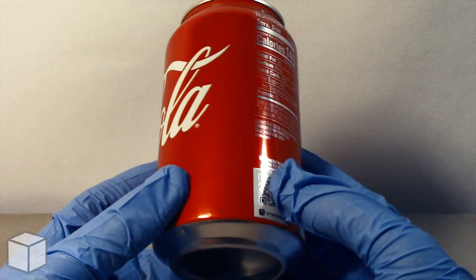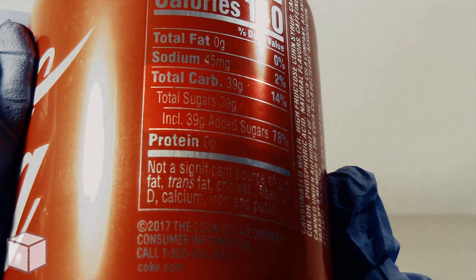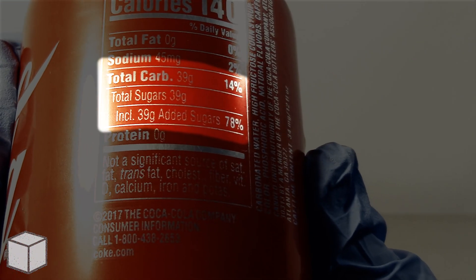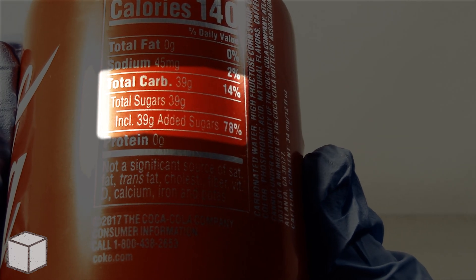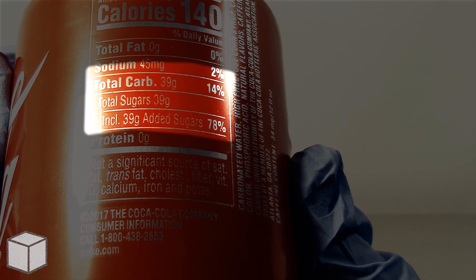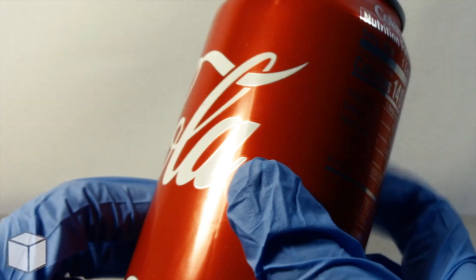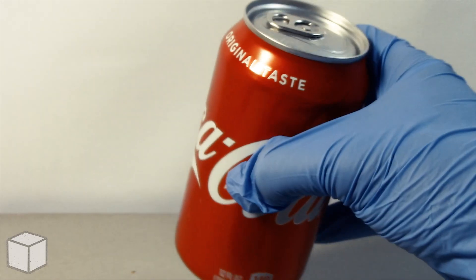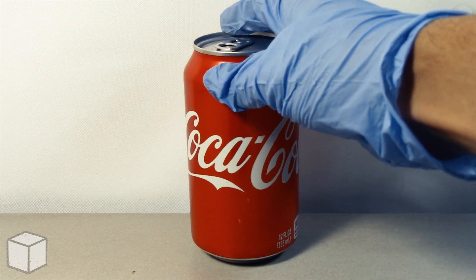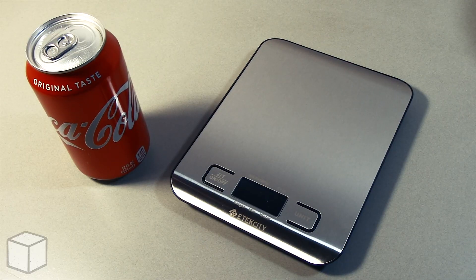Based on a 2,000 calorie diet, it may be a bit difficult to see what's highlighted, but this Coca-Cola soda has a total of 39 grams of sugar, where all of the sugar is entirely added.